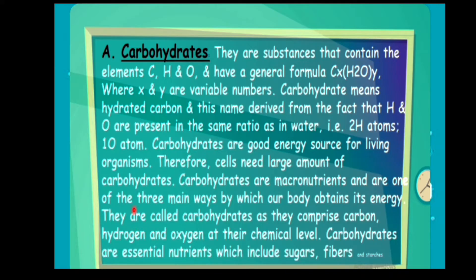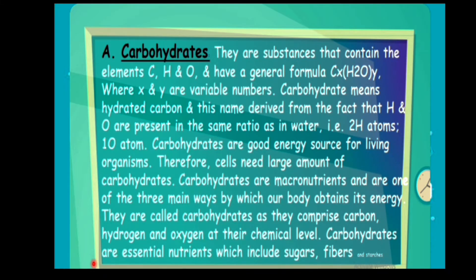The body obtains energy in three main ways. Carbohydrates are a good source of energy. They are called carbohydrates because they comprise carbon, hydrogen, and oxygen. They are essentially macronutrients.